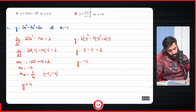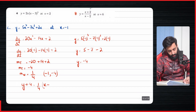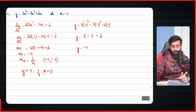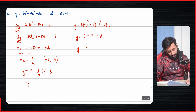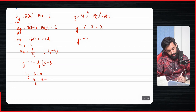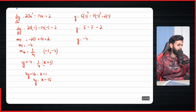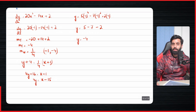So y minus (−4) becomes y plus four equals m, which is one upon four, times (x minus (−1)), becoming x plus one. Cross-multiplying: four y plus sixteen equals x plus one. Rearranging: four y equals x plus one minus sixteen, so four y equals x minus fifteen. That is the correct answer.